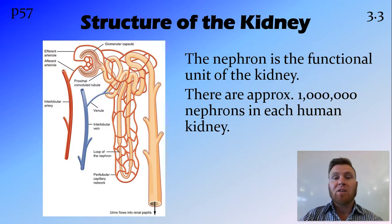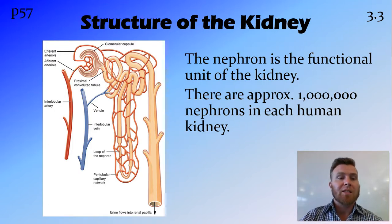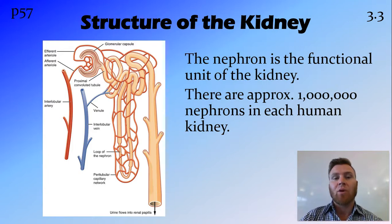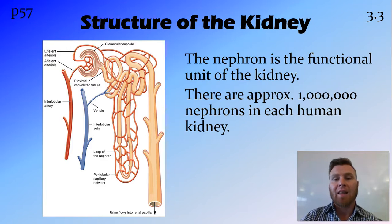The nephron is the functional unit of the kidney — the part that actually performs filtration and reabsorption. You can see that the capillaries are wrapped very tightly around the nephron, allowing for reabsorption. Once fluid is filtered into the nephron, it can be reabsorbed across the semipermeable membrane between the nephron and the capillary. Each human kidney holds about one million nephrons.